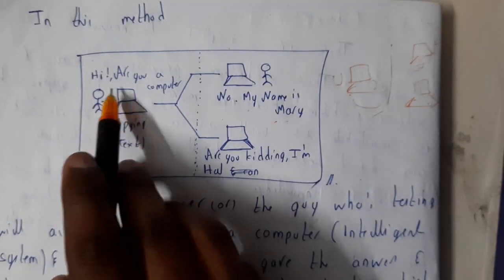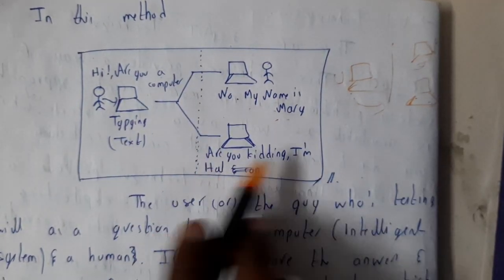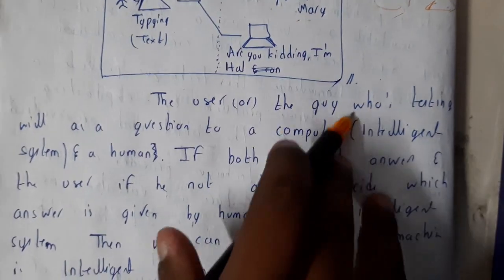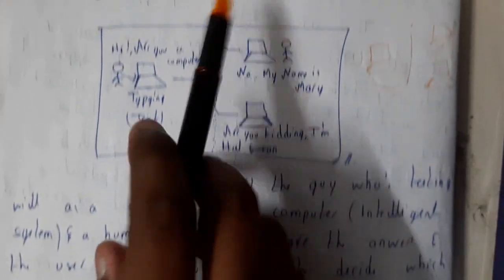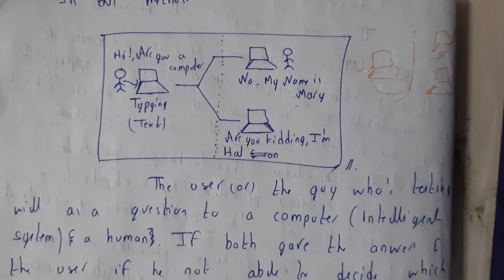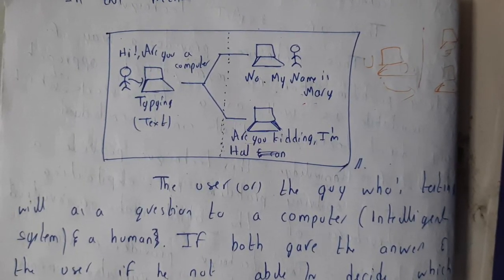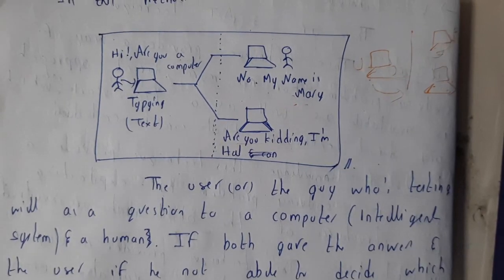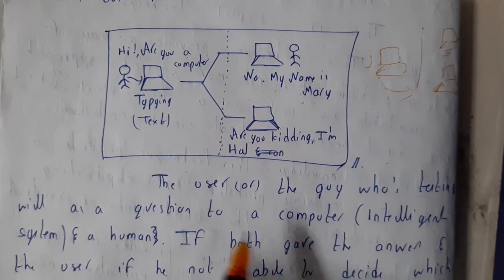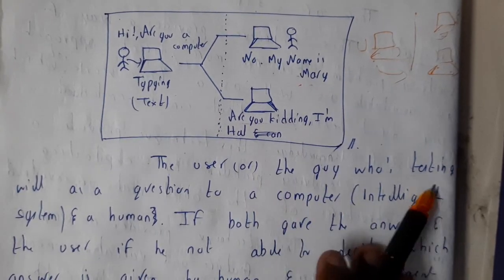Let us go through the point. Here I asked hi, are you a computer? No, my name is Mary. Are you kidding, I'm Hal. So in that way it gave the result. Can you judge which is the robot? No, we cannot judge it. Even there will be a few guys who will be just talking in that way, are you kidding, they will be having many common phrases which they will be using. That's the reason why we cannot judge them directly.